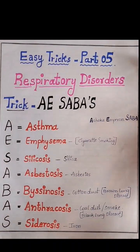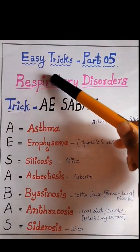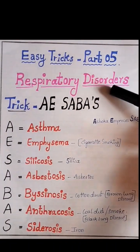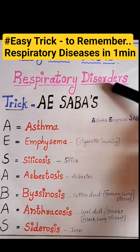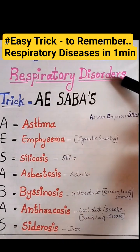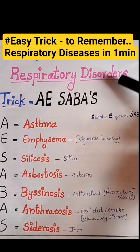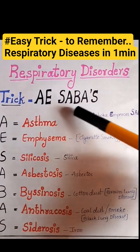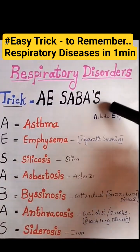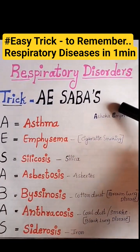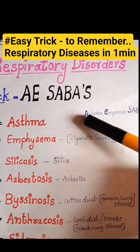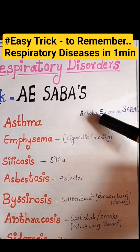Hello everyone, now you are going to learn the easy tricks to remember the respiratory disorders. The simple trick is 'AE SABAS' — remember AE as Ashoka Emperors. As you know, Ashoka had SABAS, so AE SABAS means Ashoka Emperor SABAS.